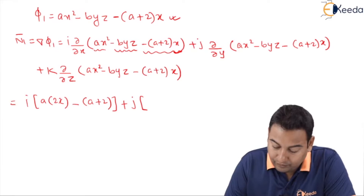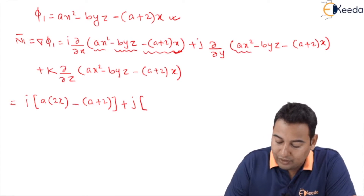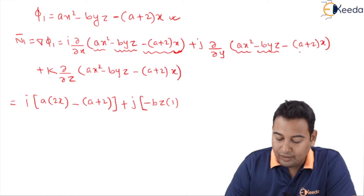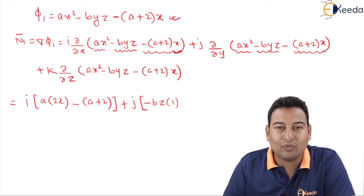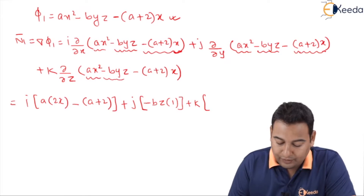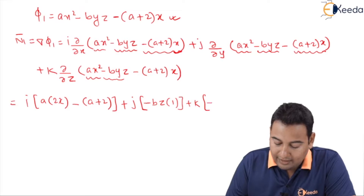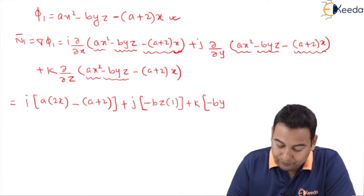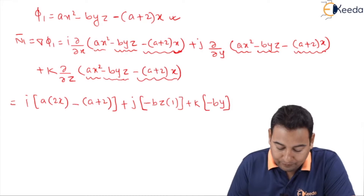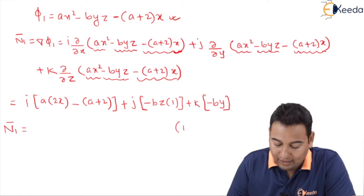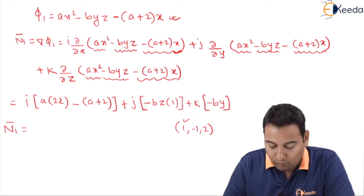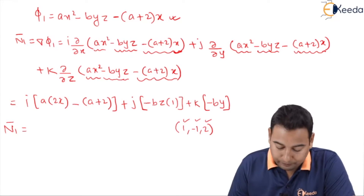With respect to y, −bz·y gives −bz, and the remaining term (a+2x) is constant so its derivative is 0. For the k component, with respect to z: the first term is constant giving 0; −by·z gives −by; and the last term is constant giving 0. So n1 bar = i(2ax − (a+2)) − bz·j − by·k. Now let's substitute the point (1, −1, 2) into n1 bar.